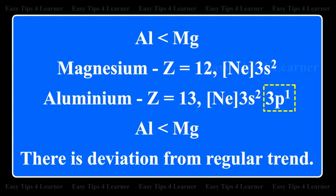One has to remove a 3p electron in case of aluminium and a 3s electron in the case of magnesium. But it is easier to remove the p electron than the s electron.